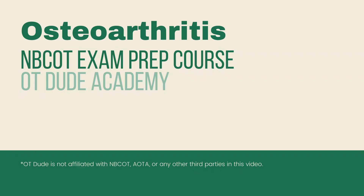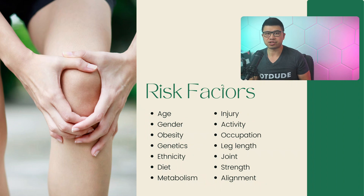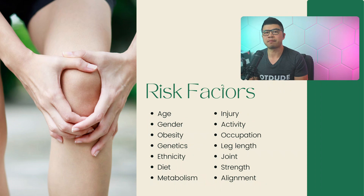There are two types of arthritis to know for the NBCOT exam: osteoarthritis and rheumatoid. Osteoarthritis, OA, is the most common form of arthritis and also a common diagnosis you will encounter in OT practice if you work in physical disabilities. It is one of the leading causes of lower extremity disability among older adults, especially in joints such as the knee and hip.